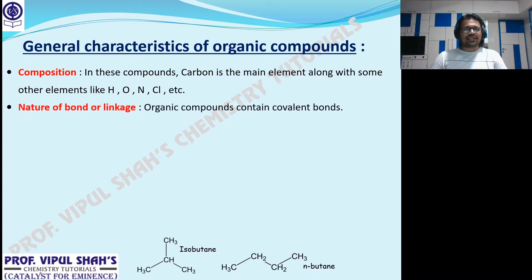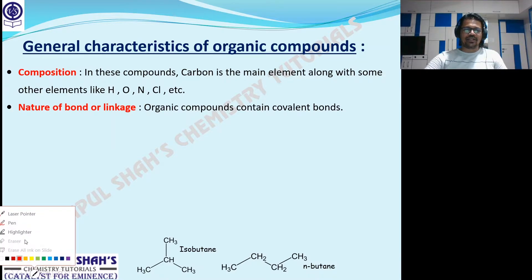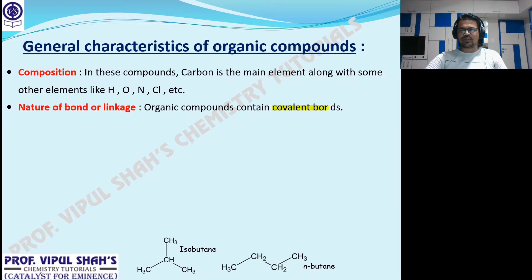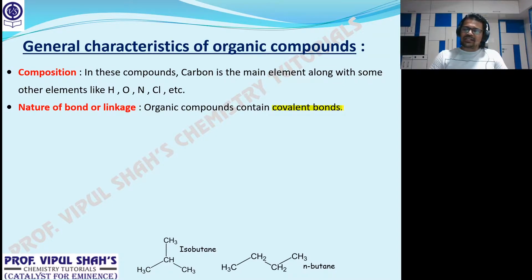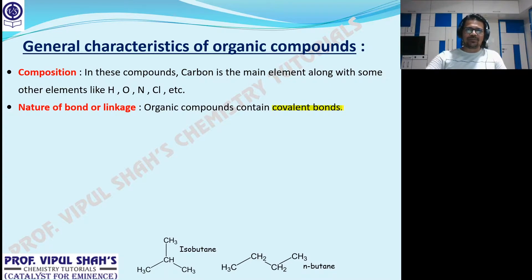Second, we have the type of linkage. When I'm talking about the type of linkage, I use the word covalent bonds. Have a look at the slide. A covalent bond is a bond formed due to sharing of electrons. When two atoms share electrons, that bond is a covalent bond. This bond is precisely between two non-metals. Organic compounds generally form covalent bonds — that's one feature.